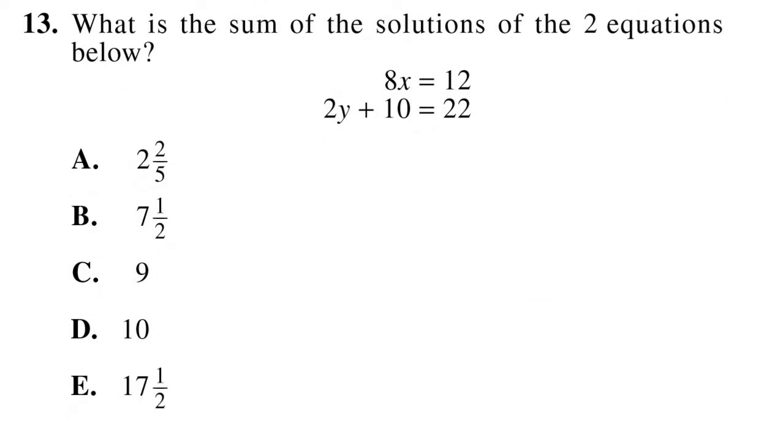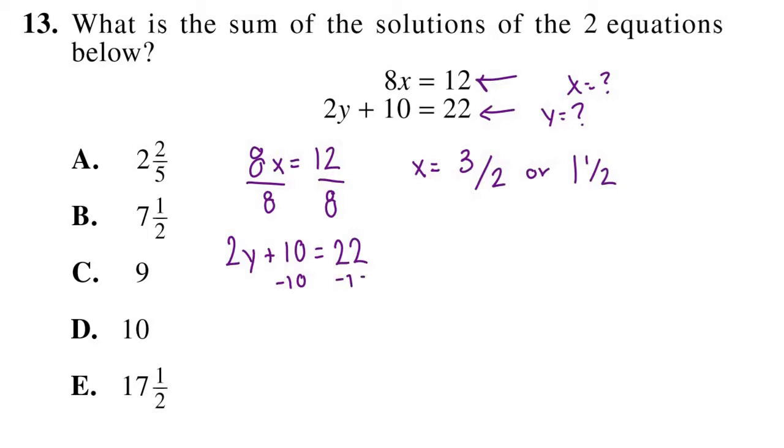Number 13, what is the sum of the solutions of the two equations below? What they're really asking us here is to first, up top, solve for x, find out what x equals and then add that to what we find for y in the second equation. So starting with 8 times x equals 12, we can solve for x by just dividing both sides by 8. So we know that x is equal to 3 over 2, or 1 and 1 half. Now let's try to solve for y. We're going to start with 2y plus 10 equals 22. We need to get this 10 over the other side so we subtract both sides by 10. We get 2y equals 12. Then we divide both sides by 2. Get y alone and we get y equals 6.